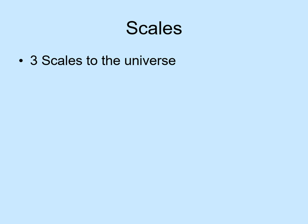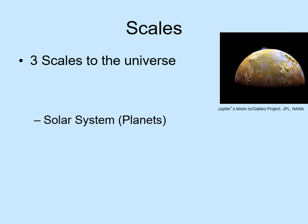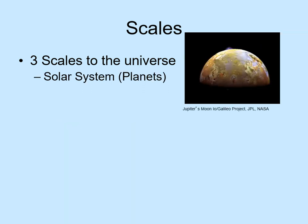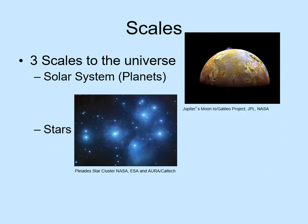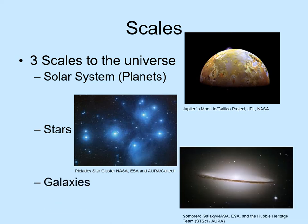If we want to understand the universe, it helps to look at it on three different size scales. The first one is the solar system size scale, our immediate neighborhood. The second one is the stellar scale, the stars and nebulae around us. Lastly, we've got the galactic scale, which extends on up to the universe as a whole.